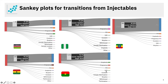Next, we provide one-to-one transition visualization using Sankey plots. Here, we see a large proportion of transitions from injectables to non-use. So, we need to further study the reason for high rates of discontinuation with injectables.